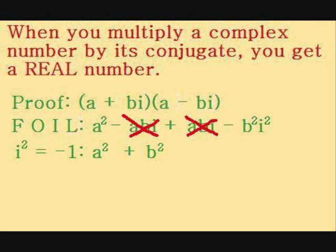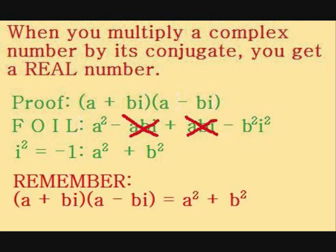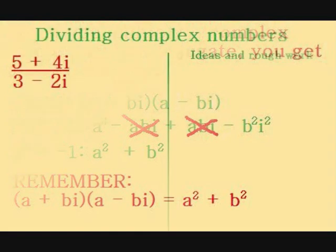So, all we're left with now is a squared plus b squared, which is a real number. It's also a formula that's well worth remembering, and I'm going to use it now to do division with complex numbers.